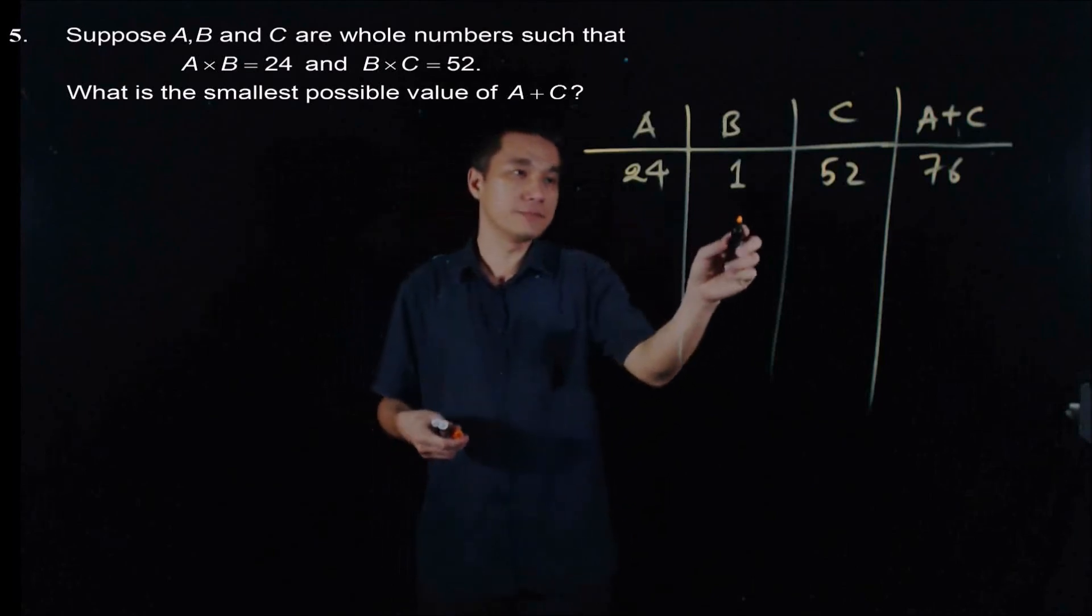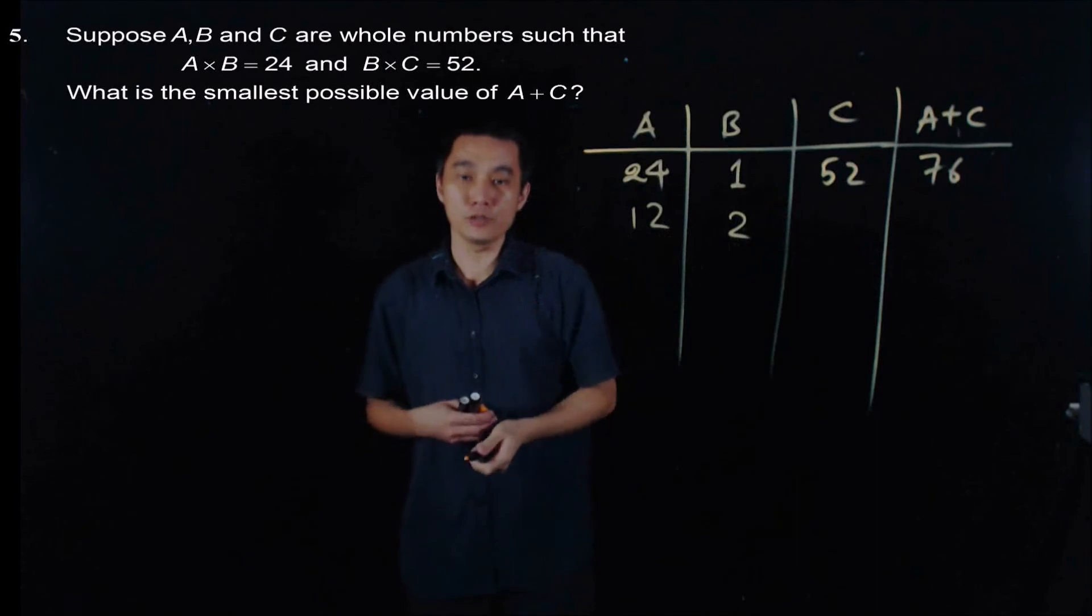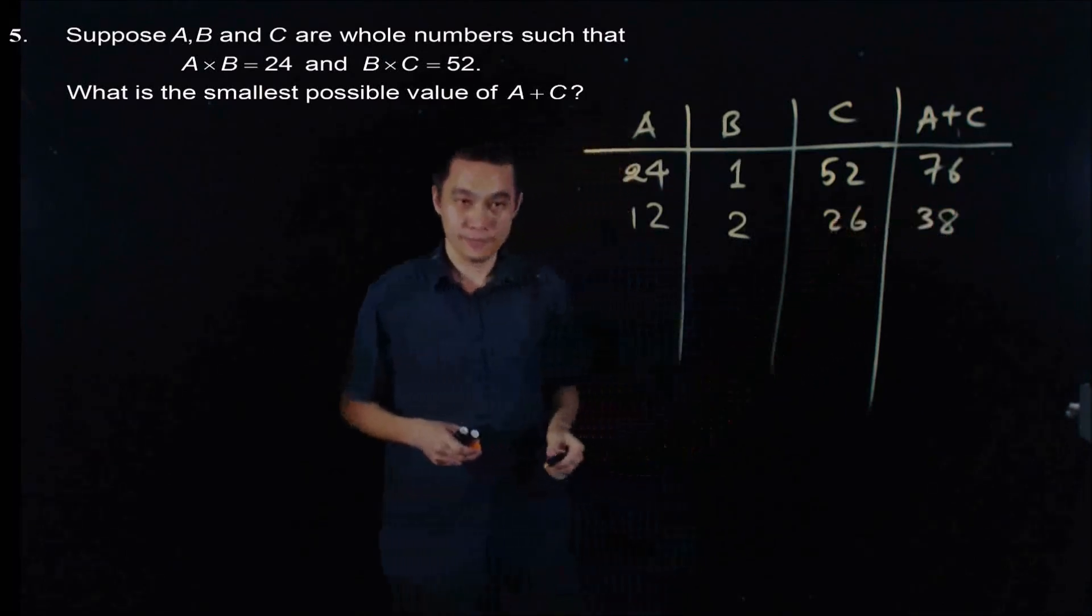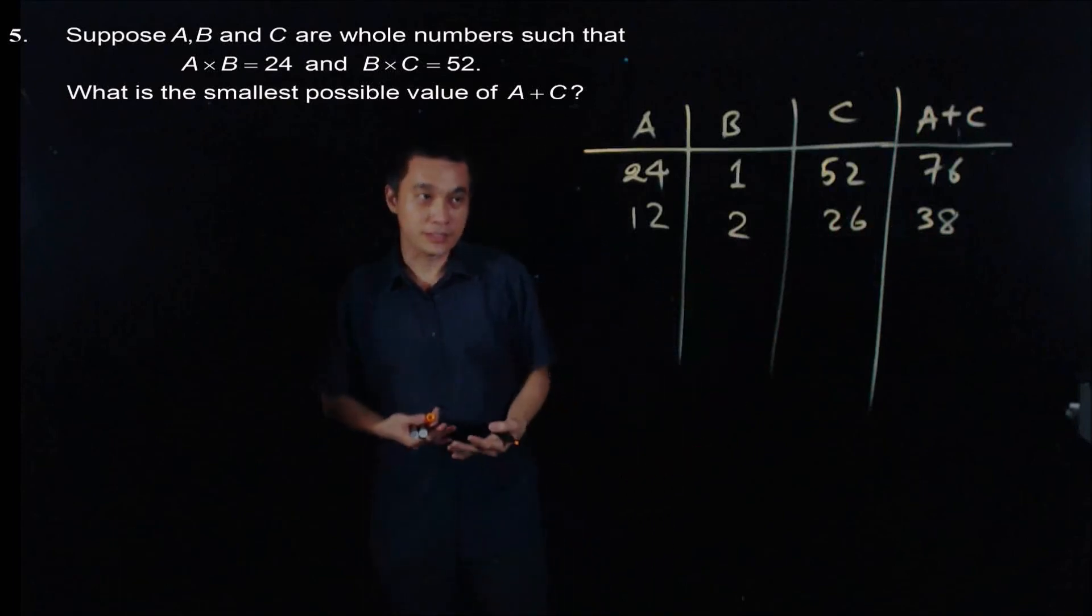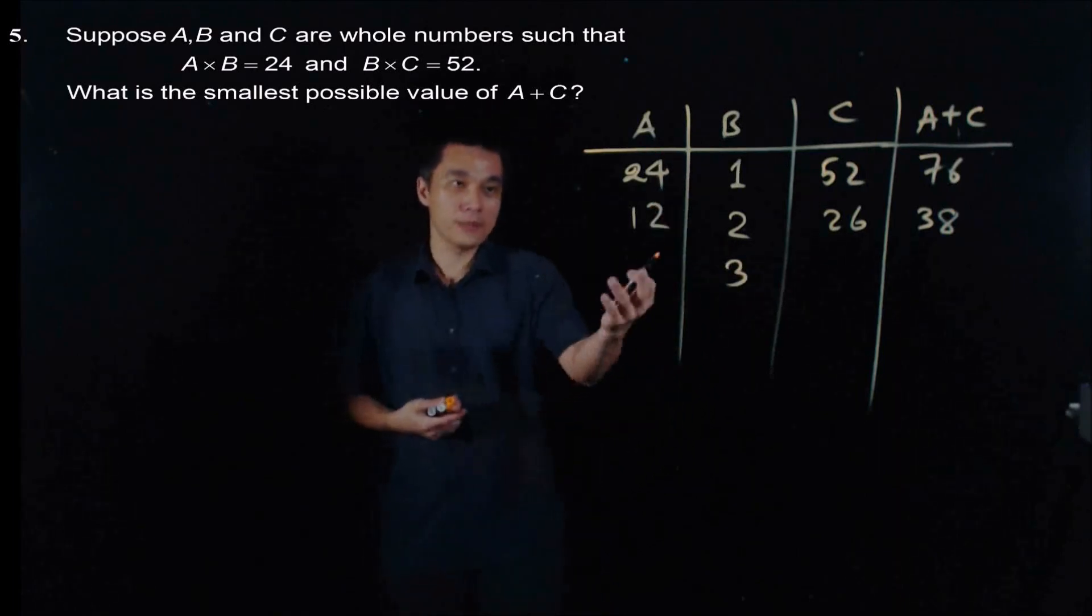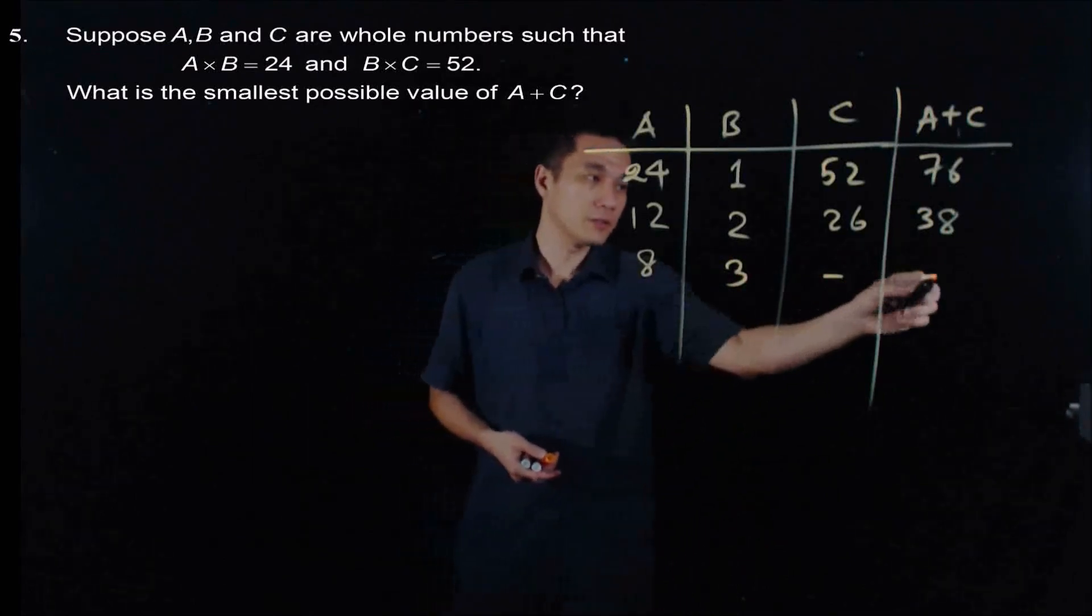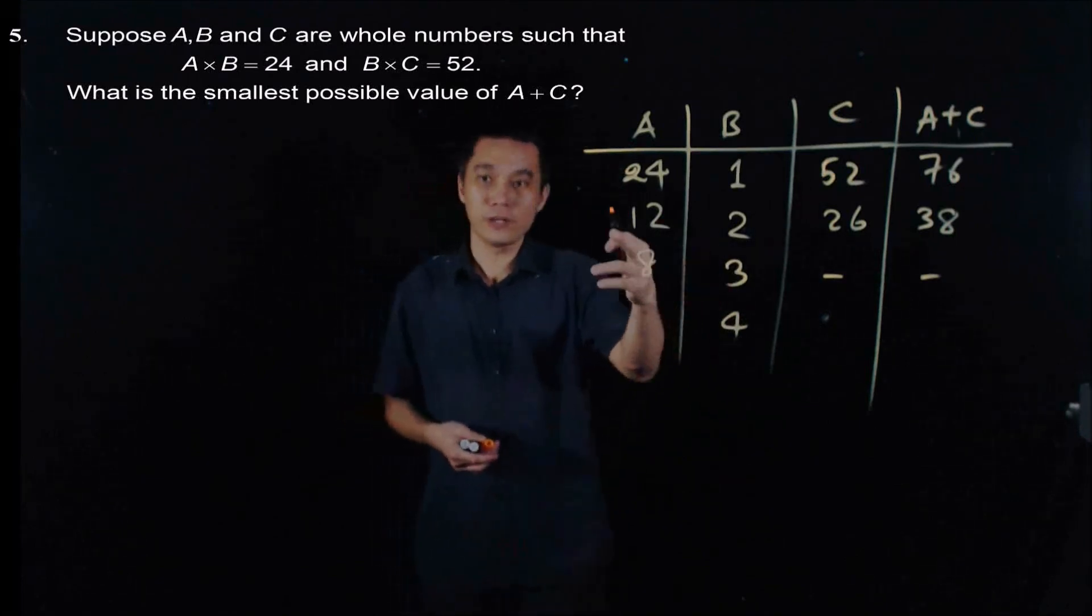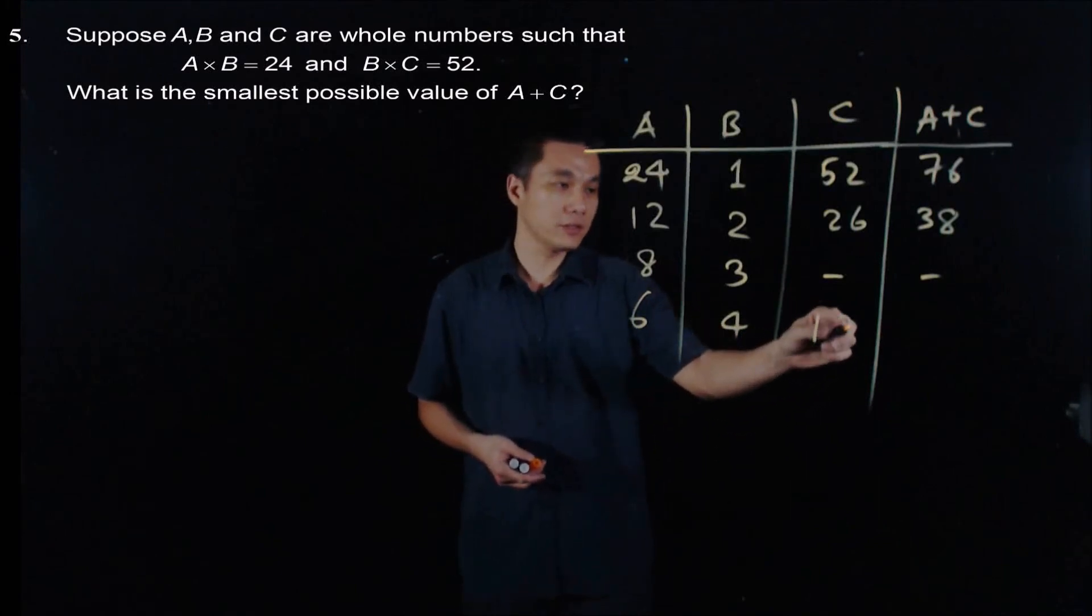Now we can have, if this is 2, then this will be equal to 12. And B times C equals to 52. This will be equal to 26. Now what we have here is this is 38. Now we can see from here that when B increases, A plus C will be decreasing. Is this true for the rest? Let's try. If this is 3, then this will be equal to 8. If B is 3, there's no such C. So it's not possible. When B is 4, when B is 4, you will have this is equal to 6. And when B is 4, this will equal to 13, and you have 19.